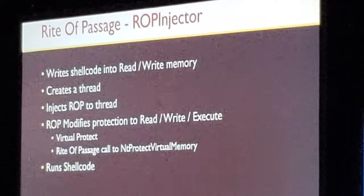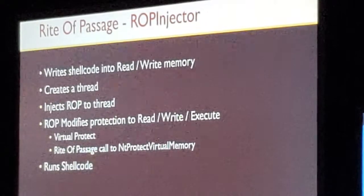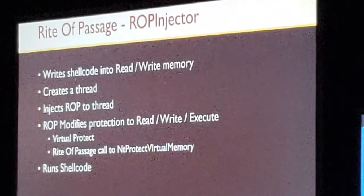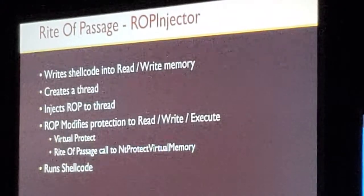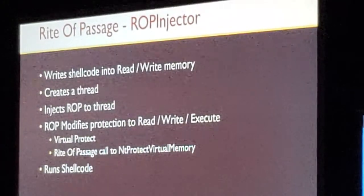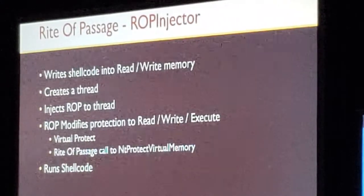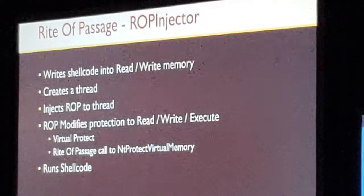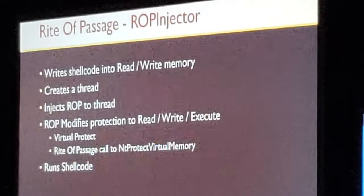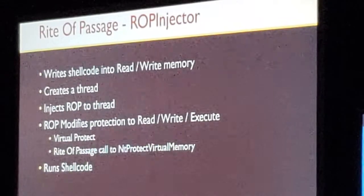I wrote a little tool called the ROP injector, which I will publish on my GitHub later. It first allocates read-write memory into the target process, writes the shellcode into that process, then creates a new thread and injects the ROP into that process using GetThreadContext and SetThreadContext. Lastly, the ROP modifies that memory area into read-write-execute using either a regular call to VirtualProtect or a Rite of Passage call to NtProtectVirtualMemory, and then runs the shellcode.